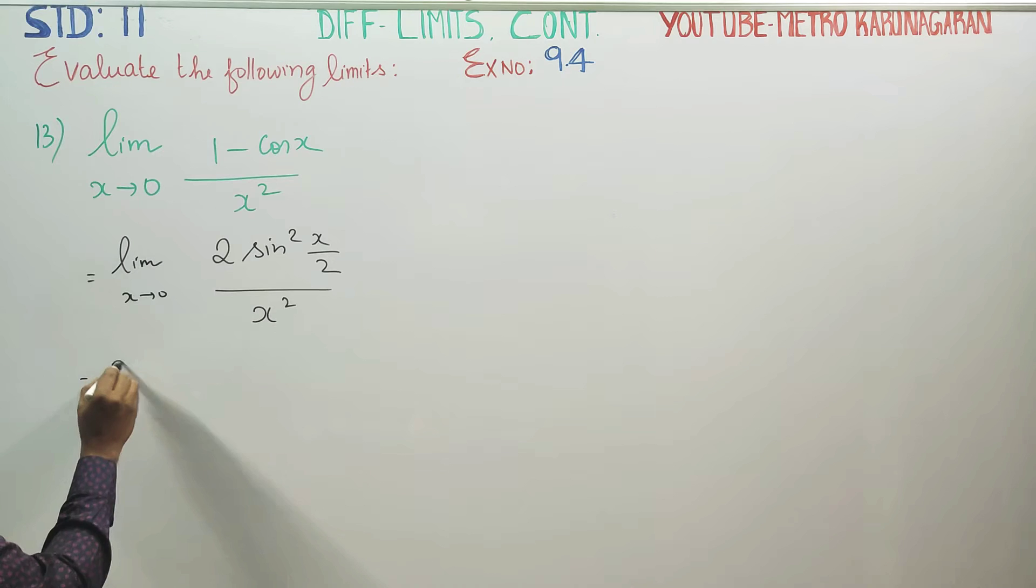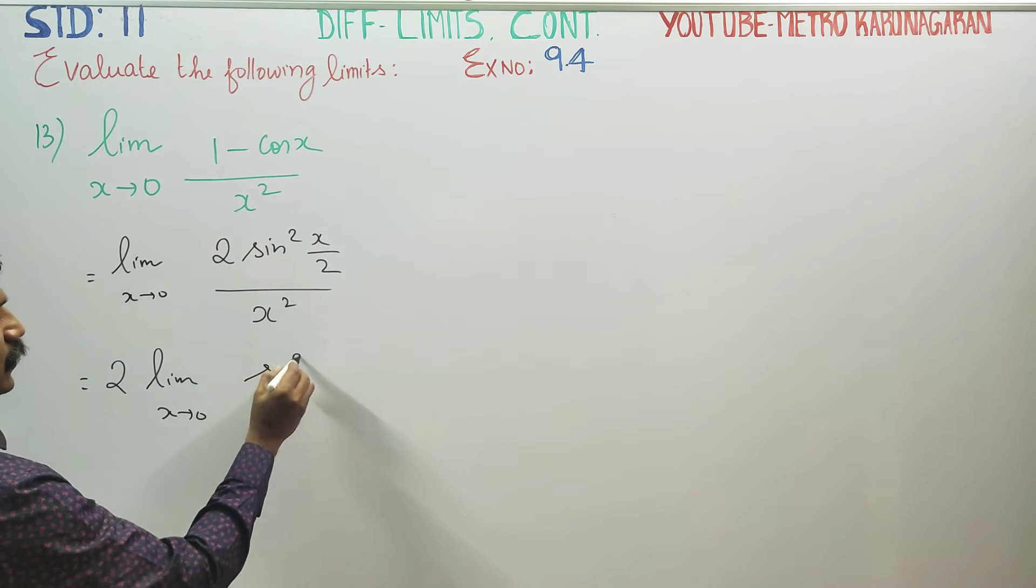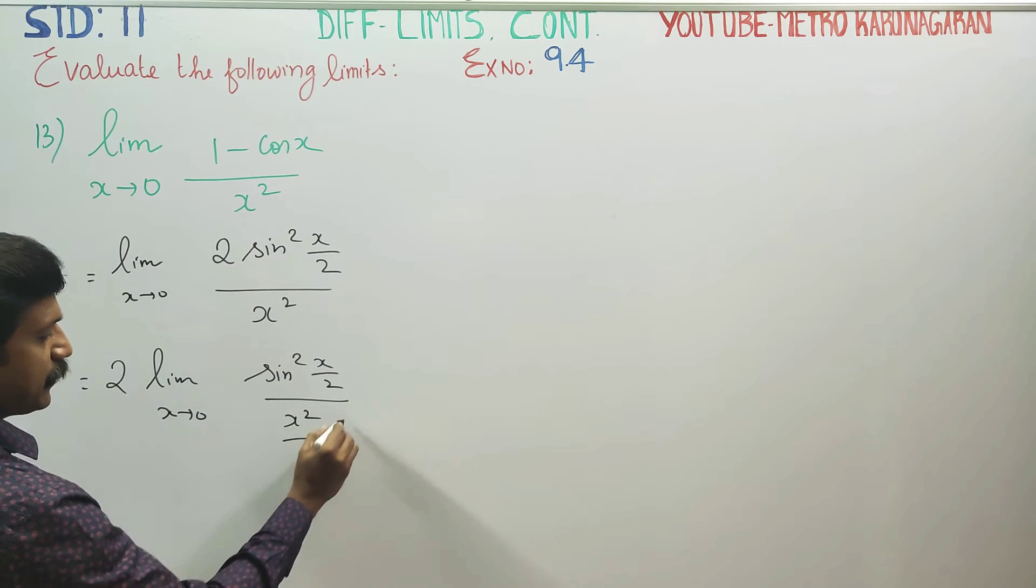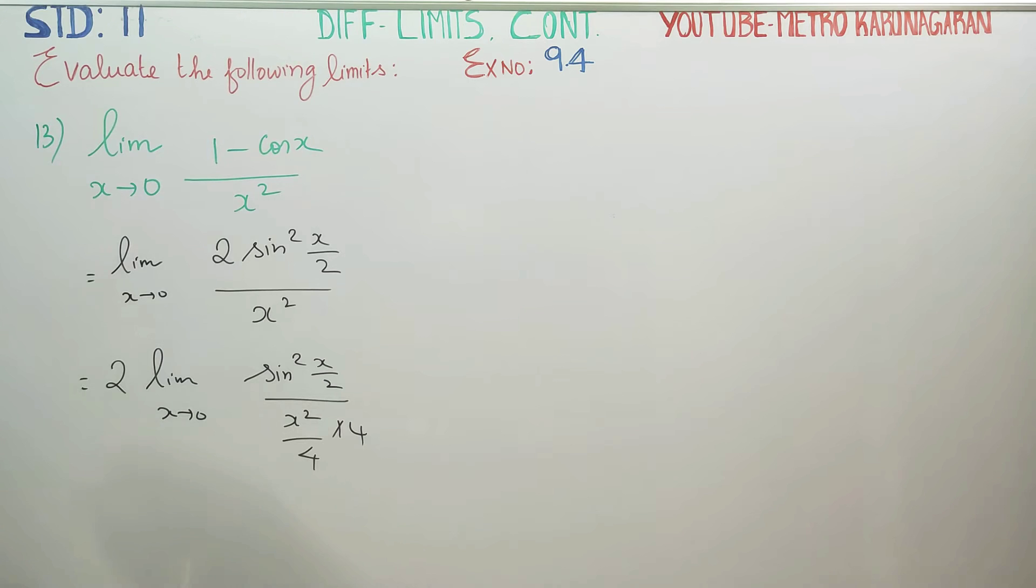In the next level, limit x turns to 0, sin square x by 2 by x square, multiply and divide by 4.